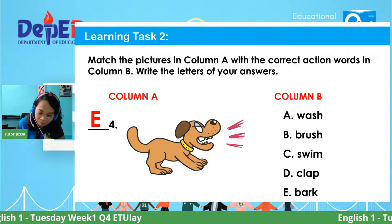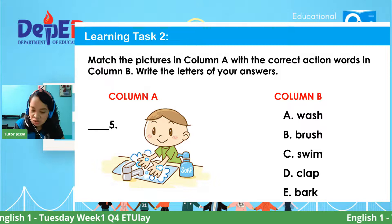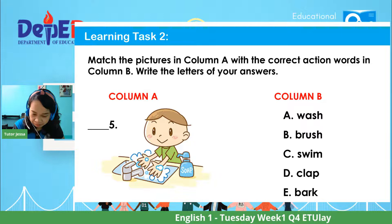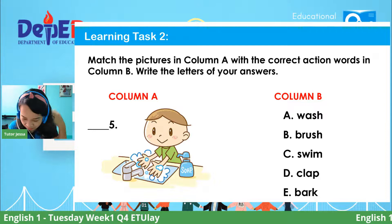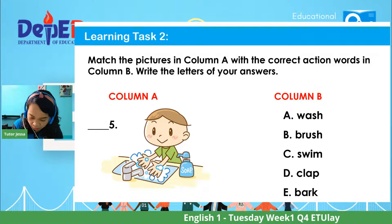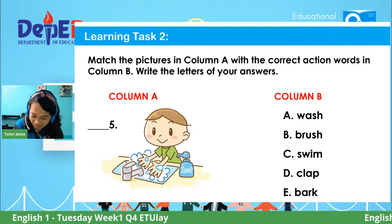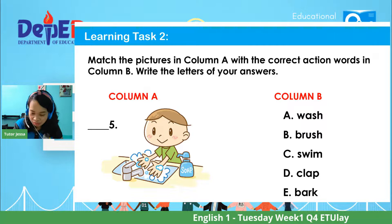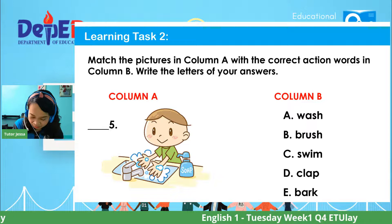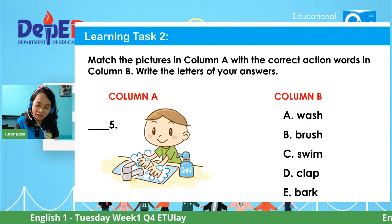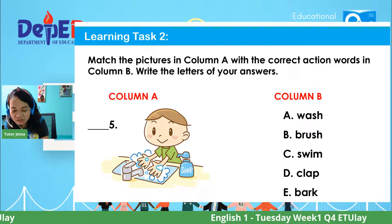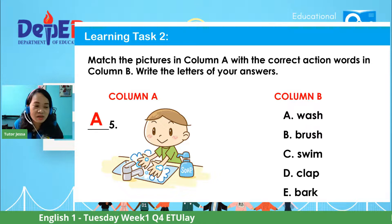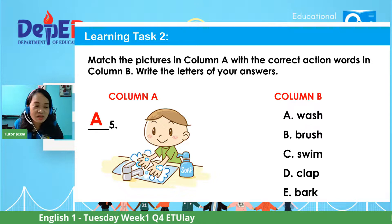Let's have the last one — number five. For question number five, that's the picture — what's the correct action word? According to Wang, number five is letter A — wash. Most of you answered letter A. Let's check if your answer is correct — the action word for this picture is letter A. Yay!